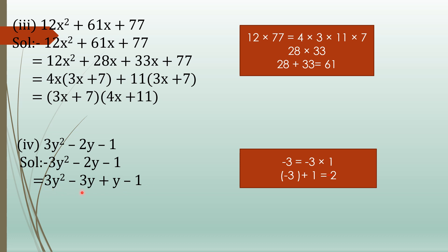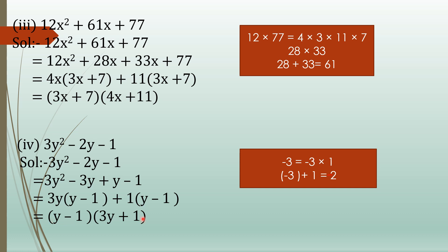Now take common from the first two terms and from the last two terms. From the first two terms, take 3y common — in bracket write y minus 1. From the last two terms, take plus 1 as common — in bracket write y minus 1. You got the same bracket y minus 1. So write one common bracket: y minus 1, and in the other bracket group the outer terms: 3y plus 1. These are the two factors of the polynomial 3y² minus 2y minus 1.